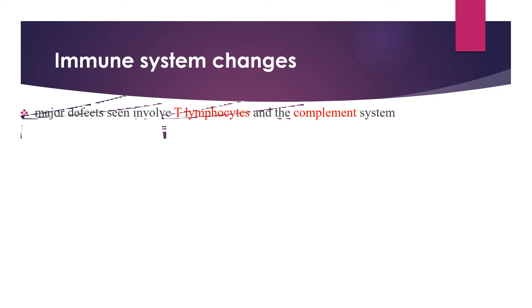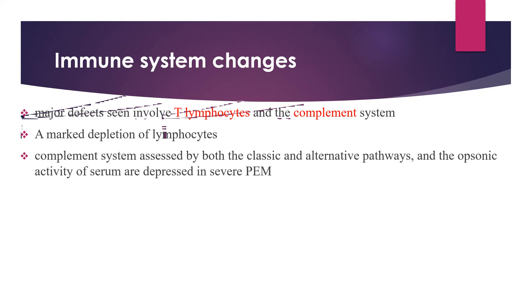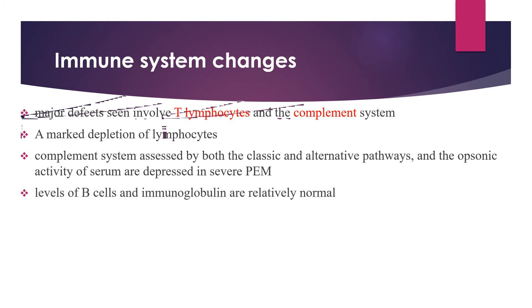Regarding immune system changes, major defects include thymus gland atrophy, so T lymphocytes and the complement system are significantly affected with marked depletion of lymphocytes. The complement system assessed by both classic and alternative pathways and opsonic activity of the serum are depressed in severe protein-energy malnutrition. Levels of B cells and immunoglobulins are relatively normal compared to T lymphocytes and complement levels.